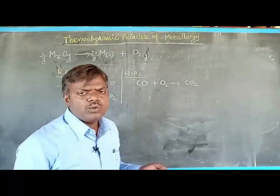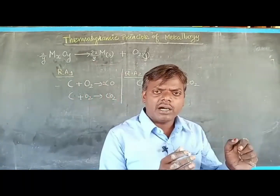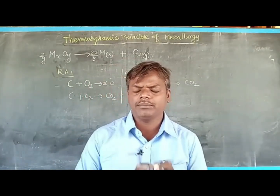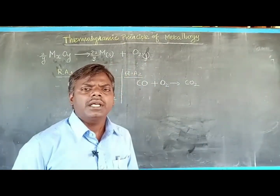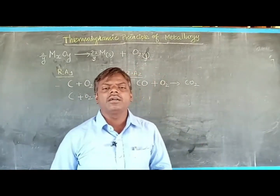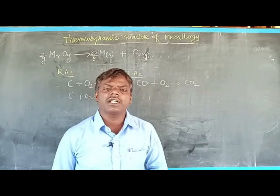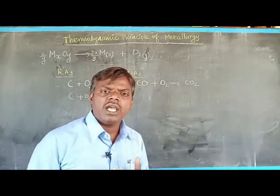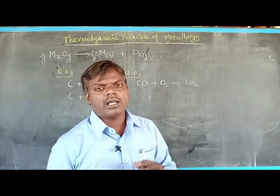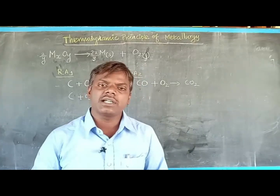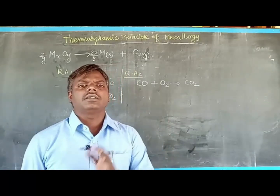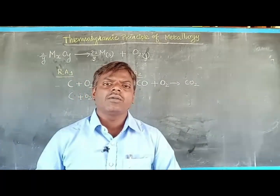We can use either carbon or carbon monoxide as reducing agent for the reduction of metal oxide to metal. But in actual fact, we cannot use both carbon as well as carbon monoxide as reducing agents simultaneously. So we have to select any one of the reducing agents for this reduction purpose.